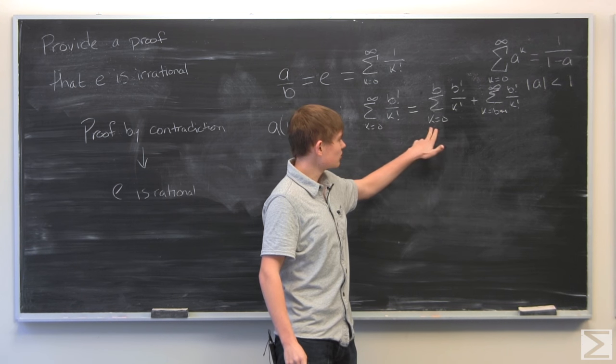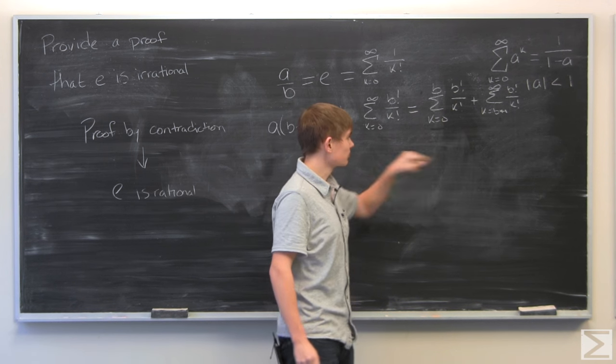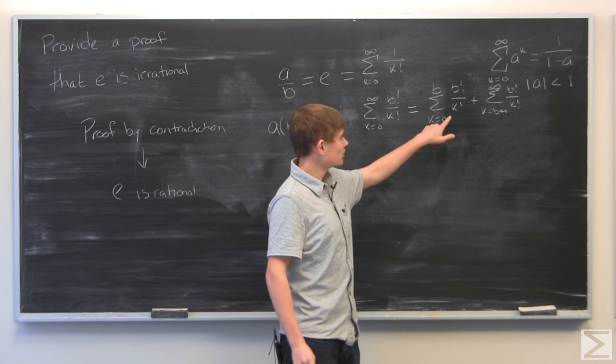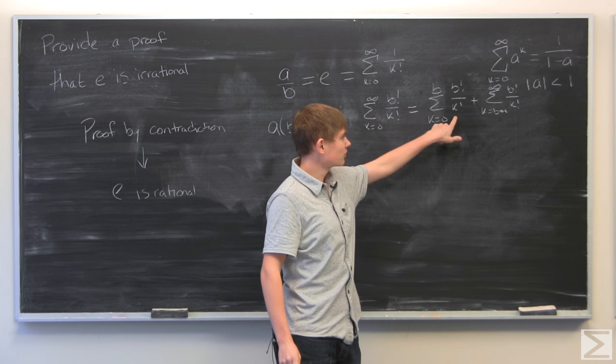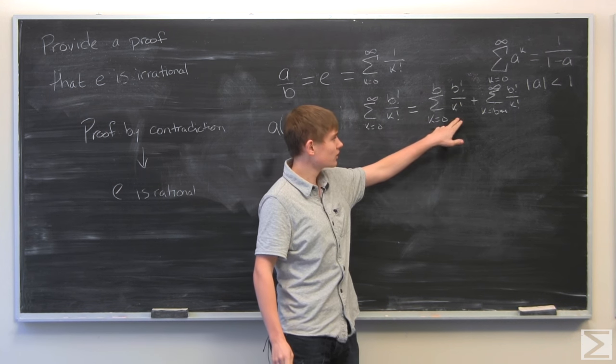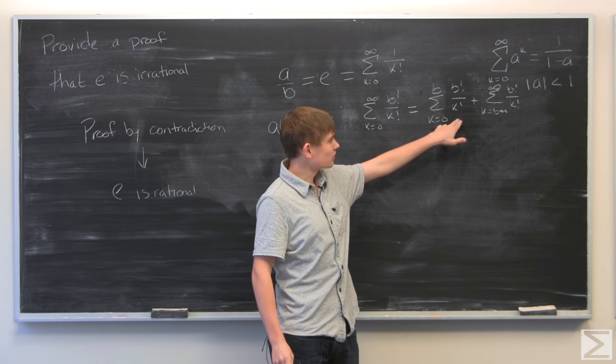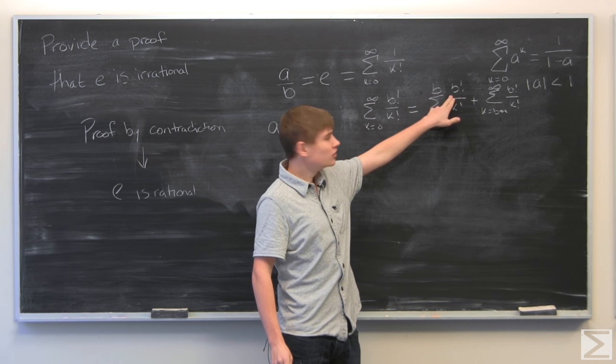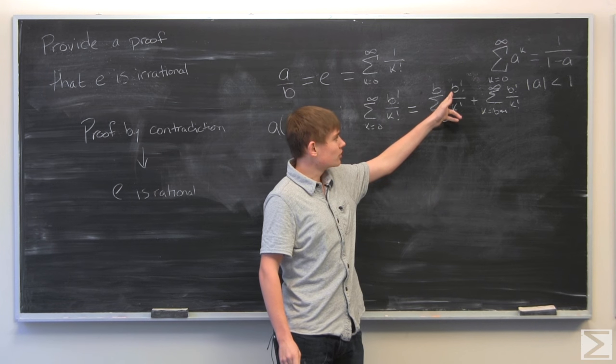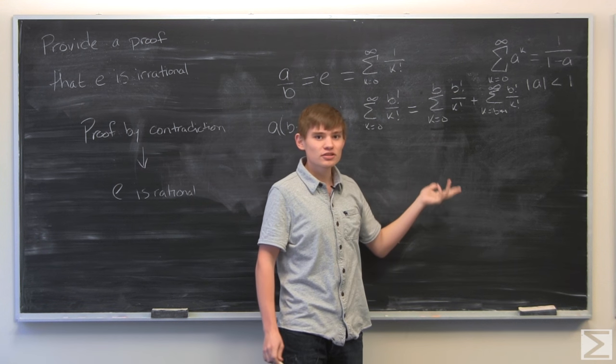And the reason why I did this is because this is going to be an integer. Since as long as B is greater than k, if you do B factorial over k factorial, all of the factors of k are going to be in B. So, they'll cancel out and we'll be left with integers. And the sum of integers is going to be an integer.